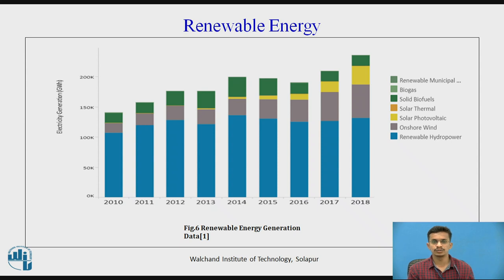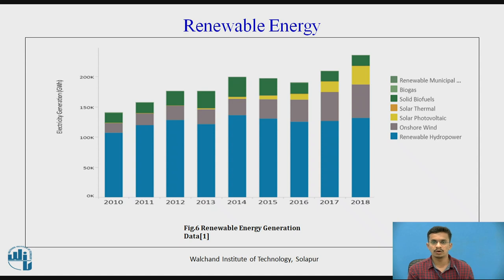This chart shows the renewable energy generation data — the energy generated by various means of renewable energy sources. We can observe that renewable hydropower contributes around 50 to 60 percent of the total energy produced by renewable energy sources, followed by offshore wind, solar photovoltaic, solar thermal, solid biofuels, and biogas.